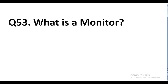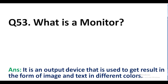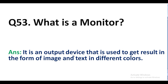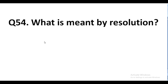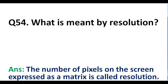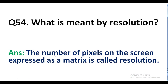Question number 53. What is a monitor? Answer. It is an output device that is used to get results in the form of image and text in different colors. Question number 54. What is meant by resolution? Answer. The number of pixels on the screen expressed as a matrix is called resolution.